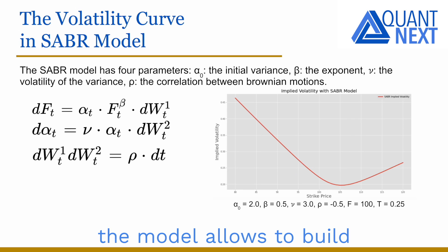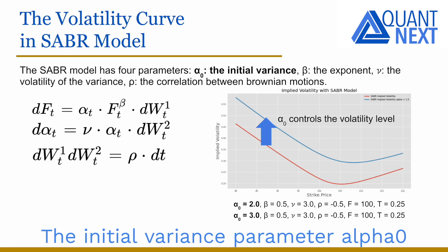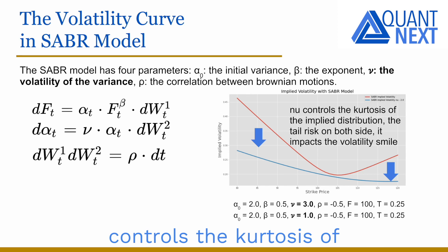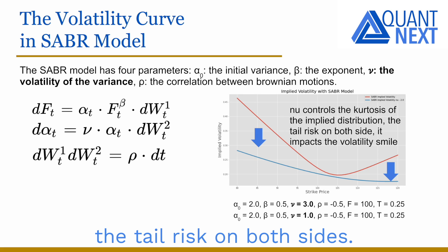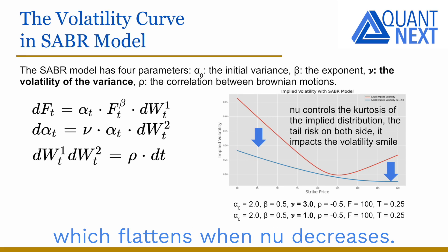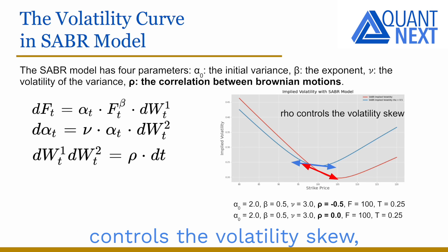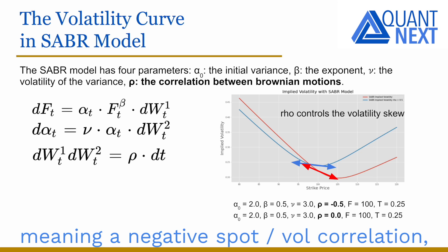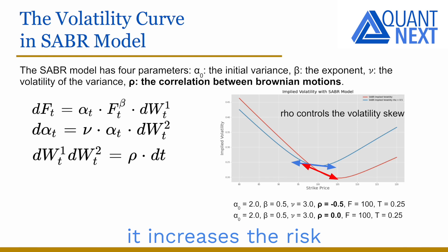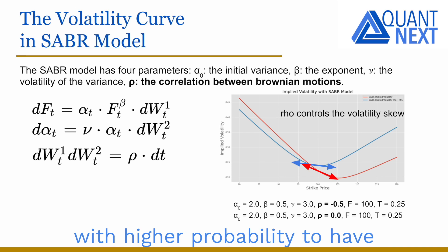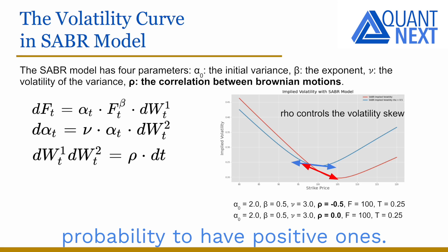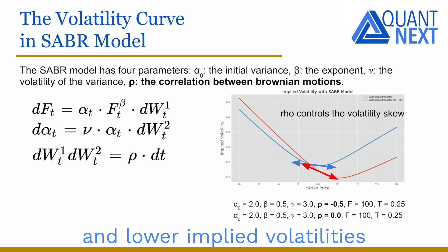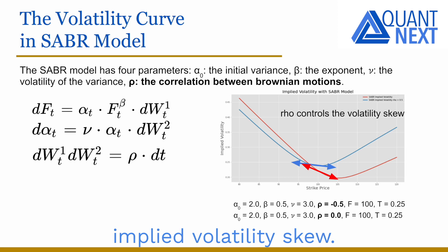With its four parameters, the model allows to build many shapes of volatility curve. The initial variance parameter alpha zero controls the volatility level. Nu, the volatility of the variance, controls the kurtosis of the implied distribution — the tail risk on both sides. It impacts the volatility smile, which flattens when nu decreases. The correlation parameter rho controls the volatility skew, the slope of the volatility curve around the at-the-money. When rho is negative, meaning a negative spot-vol correlation, it increases the risk on the downside and decreases the risk on the upside, with higher probability of negative returns and lower probability of positive ones. This translates into higher implied volatilities on the left side and lower implied volatilities on the right side, creating a negative implied volatility skew.